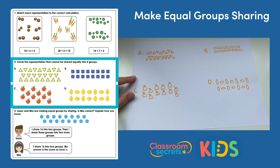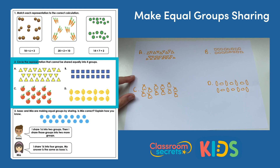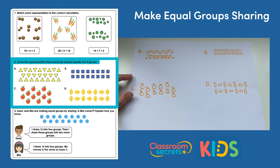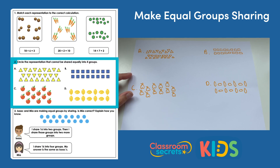Question two: circle the representation that cannot be shared equally into four groups. We need to count up how many there are in each representation and then figure out which can and cannot be shared equally by drawing our groups and sharing them out.